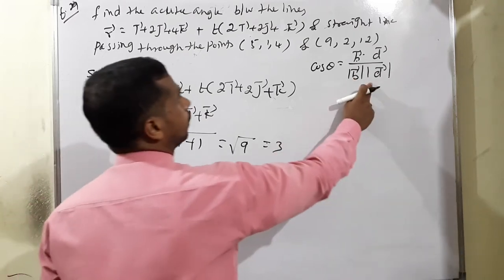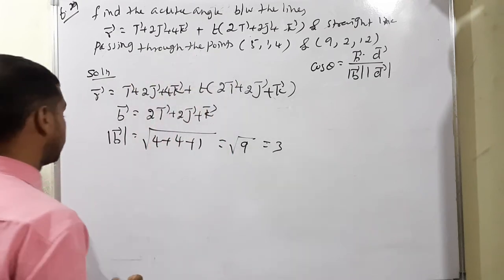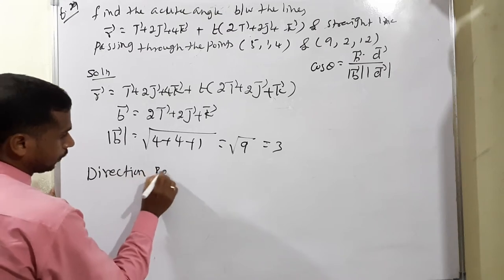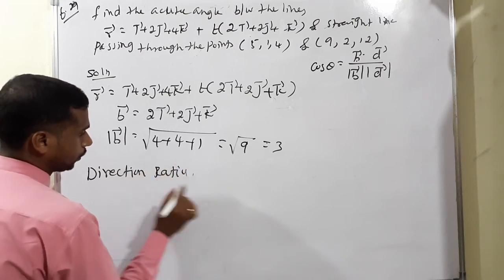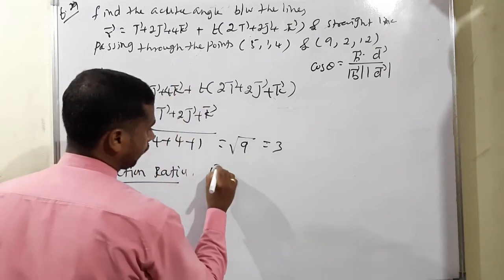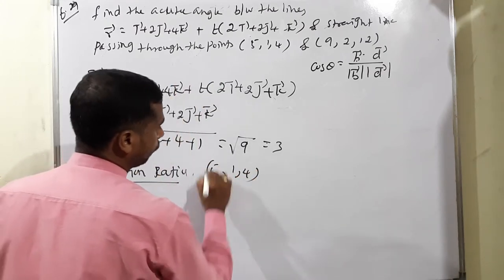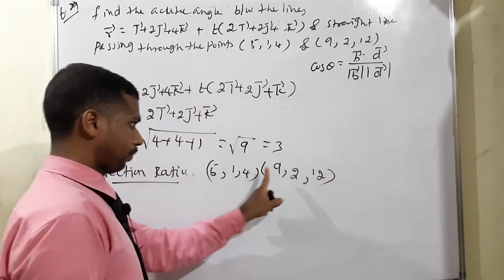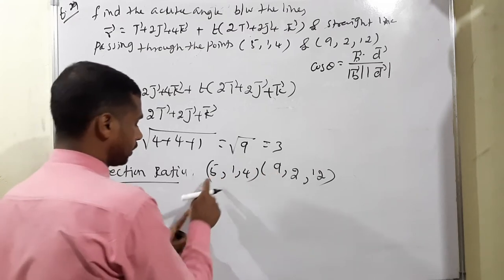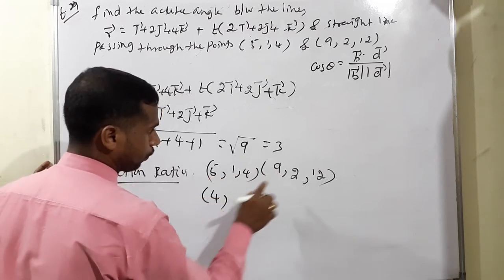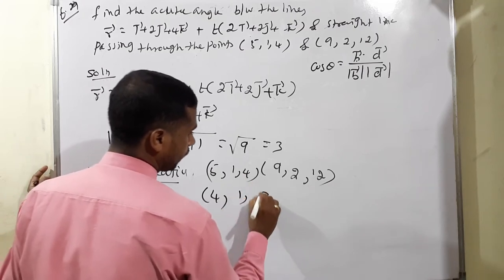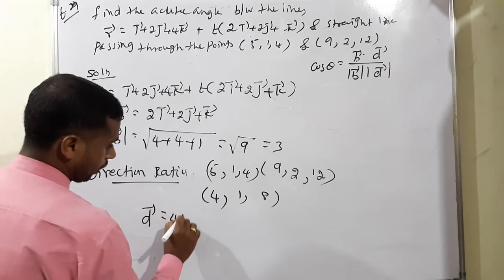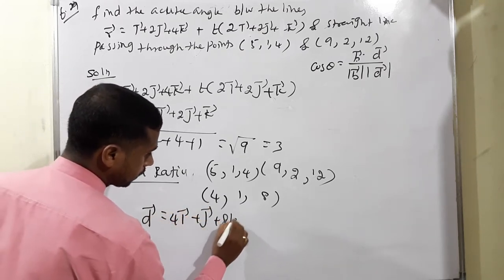For d vector, the direction ratio comes from the two given points: 5,1,4 and 9,2,12. Subtracting: 9 minus 5 equals 4, 2 minus 1 equals 1, 12 minus 4 equals 8. So d vector equals 4i plus j plus 8k. Modulus of d vector equals square root of 16 plus 1 plus 64 equals square root of 81 equals 9.